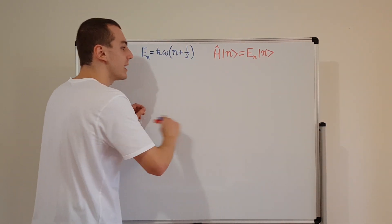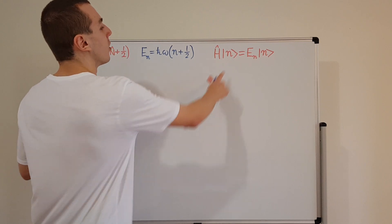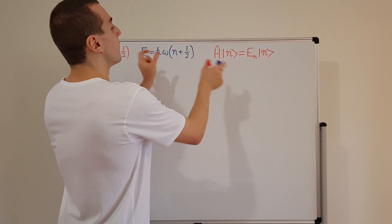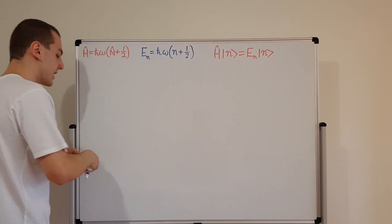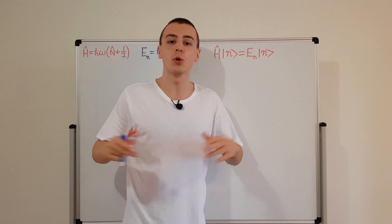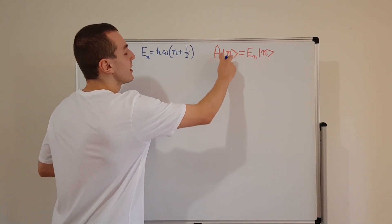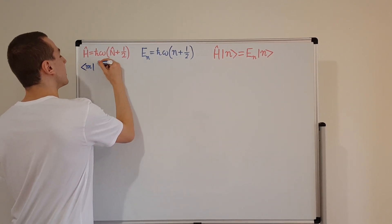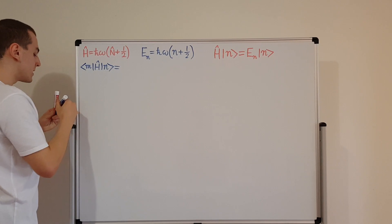To find the matrix elements, we're going to take a sandwich of the Hamiltonian operator — sandwiching it between two eigenstates. I'll label one eigenstate by m and the other by n; that is standard notation (sometimes you see i and j, or n and n-prime). So we will have bra m, then the Hamiltonian, then ket n. This is a Dirac notation sandwich: a bra, an operator, and a ket.